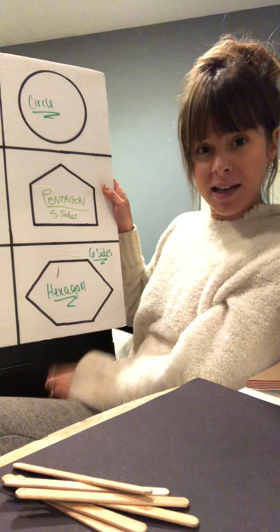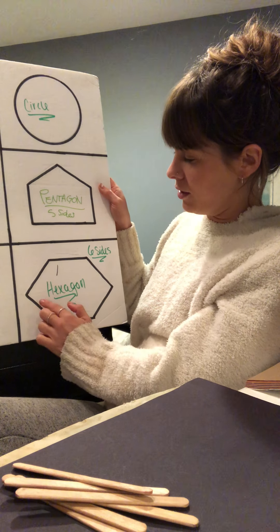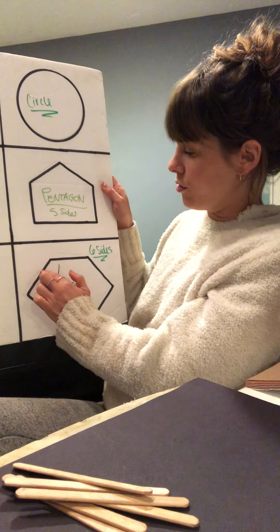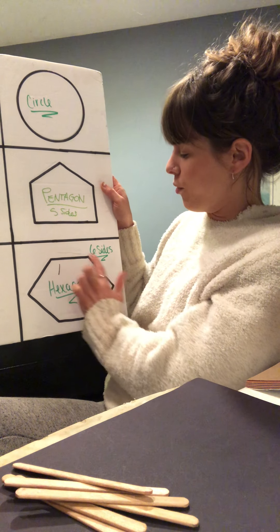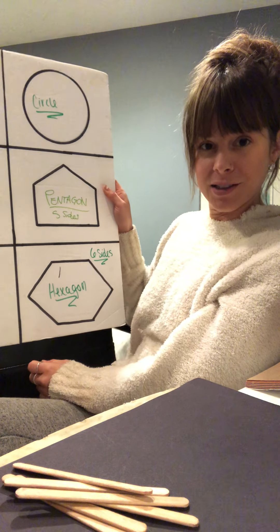Then we have our hexagon here. That has one, two, three, four, five, and six sides on our hexagon. Great. Now that we've gone over that, let's make some shapes using our objects.